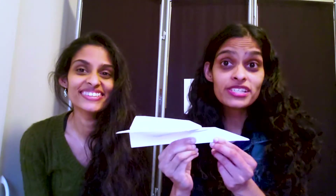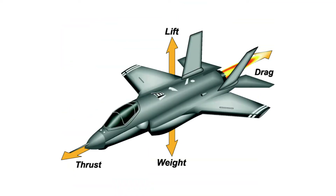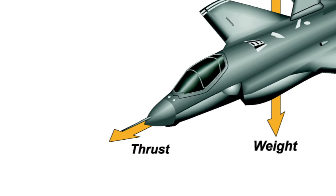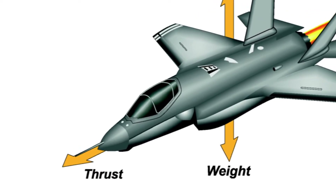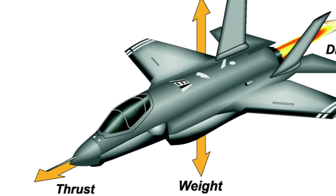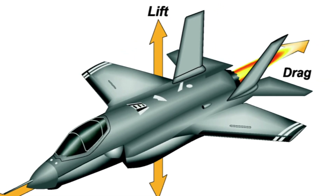There are four forces, which are pushes or pulls on an object, that help keep that plane going on its journey. And the first one is thrust. That's an opposite reaction to the plane's engines, which is pushing air back from behind. So then the air pushes the plane forward because of Newton's third law, which says that every force has an opposite and equal reaction.